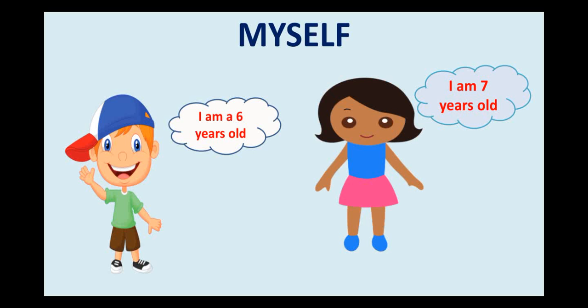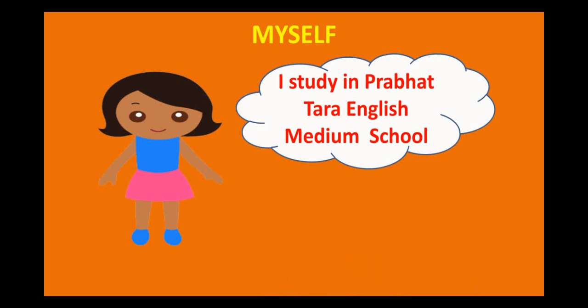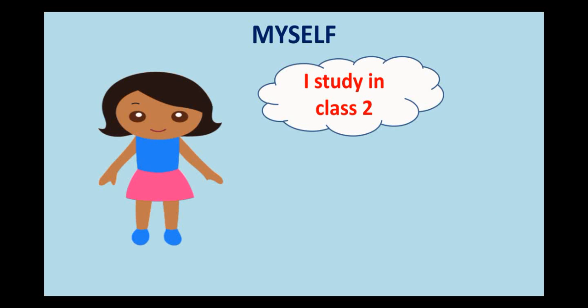They have told us their respective ages. So, do you remember what they told in the beginning? They told their name and now they are also telling their age. Now let us see what Ritu is going to tell more about herself. Ritu is saying that she studies in Prabhat Tara English Medium School — she is telling us the name of her school. Do you know the name of your school? Ritu says she studies in class 2, just like all of you.